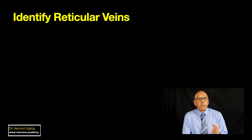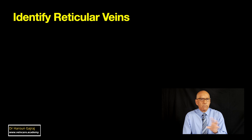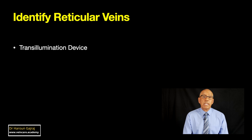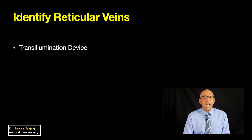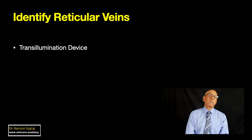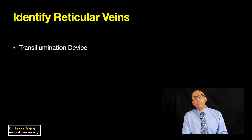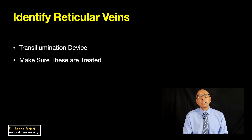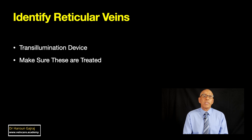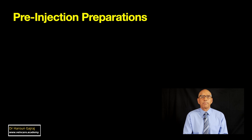Step five: identify any feeder veins, also called reticular veins. I find transillumination with a device such as a vein light particularly helpful. Having identified any reticular veins near your spider veins, make sure that these are injected as part of the treatment process.